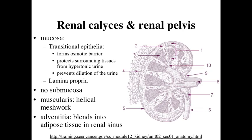If we take a look at the mucosal lining of our renal calyces and renal pelvis, this is where we're going to start to see our transitional epithelia being present. Our transitional epithelia, many cell layers thick, so we're going to have a stratified epithelia. It's going to help establish an osmotic barrier, preventing materials from passing through it so that it doesn't dilute the urine, as well as not exposing the surrounding tissues to that very hypertonic urine, because that very high concentration of materials has the potential of dehydrating that region, drawing water out of it and damaging the cells in that area.